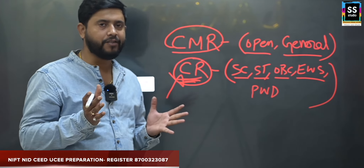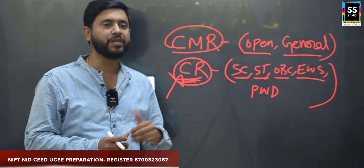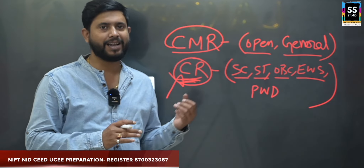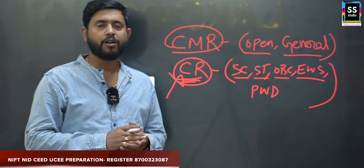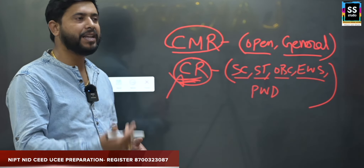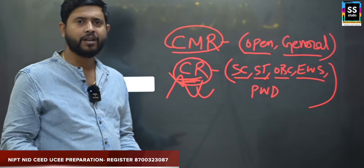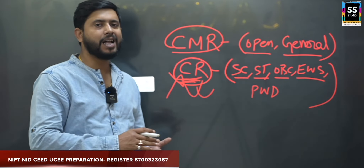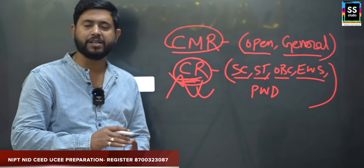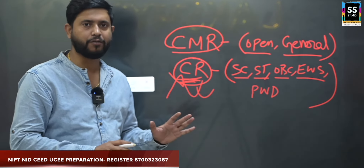Do not get confused — I started getting messages on Instagram and WhatsApp since morning saying 'I cannot see my category rank.' You won't see it because you belong to general category. Even if you were able to see the category rank, it is of no use, because category rank is only counted for SC, ST, OBC, EWS, and PWD categories. For open category it is of no use.